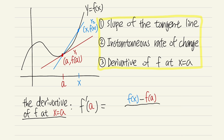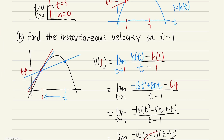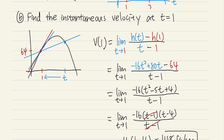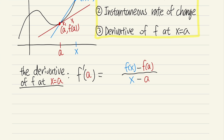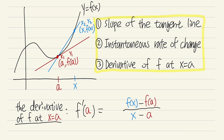We divide by x2 minus x1 — x2 is the x value and x1 is the a value. This is just the slope formula, which is exactly what we did for instantaneous velocity: the difference of the function h of t minus h of 1, divided by t minus 1. Here instead of 1 we put a. In order to get the slope of the tangent line, we need x to be as close to a as possible.